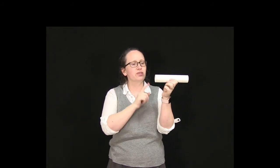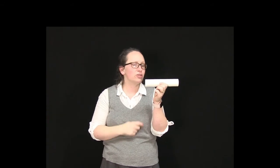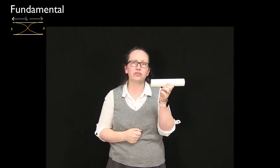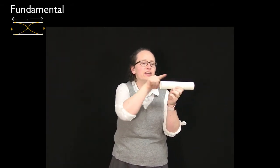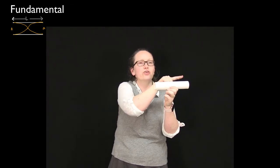So now let's consider a pipe which is open at both ends. When the pipe's open at an end, then we end up with an antinode at that open end. So in this case the fundamental frequency has an antinode here, an antinode here, so we'll need a node in the middle.